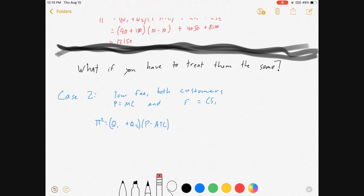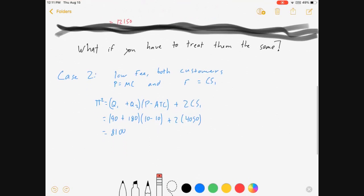In this case, profit would be: instead of adding CS1 plus CS2 like before, I'm adding 2 times CS1, which means (90 + 180) times 0 plus 2 times 4050 = 8100. One quick note: the quantities didn't change because my price is still marginal cost.